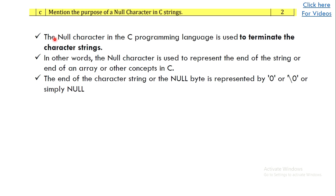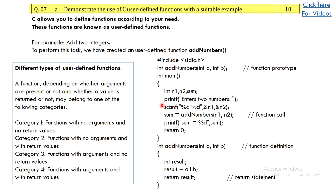There is a small question asking to mention the purpose of the null character in strings. Write three points — what is a null character and why and how it is used in strings. We all know that to terminate a character string we use the null character: when the compiler encounters a null character in a string, it knows that is the end of the string. This will fetch you two marks.